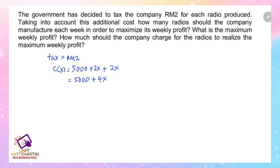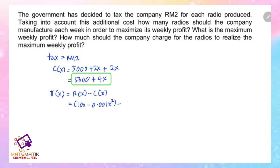Now find the new profit function, since we want to maximize profit. New profit = revenue minus new cost: π(x) = (10x - 0.001x²) - (5000 + 4x). After the tax, the new profit function is π(x) = 6x - 0.001x² - 5000.